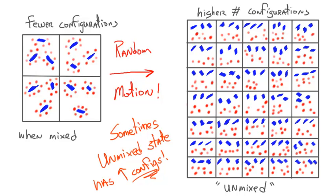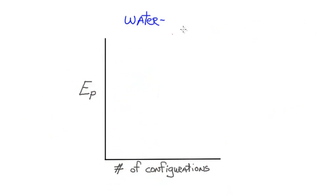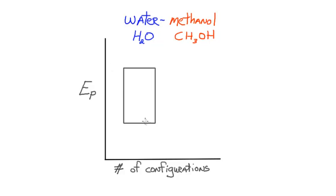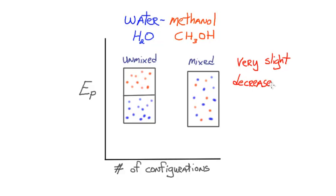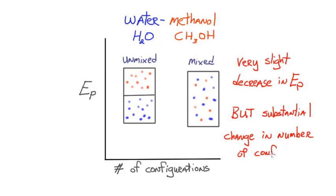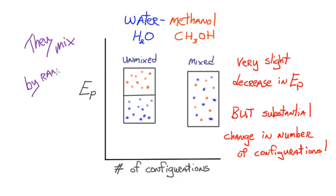Now let's take a look at some examples. Starting with water and methanol — we know that water and methanol mix very well, so let's use the Peck diagram to understand why. If we plot water and methanol unmixed on the Peck diagram, we can see that in general it's slightly higher potential energy unmixed compared to mixed. In addition, there is a higher number of configurations when water and methanol mix versus unmixed. So both factors — the energetic factor and the configurational factor — favor water and methanol mixing, and they dissolve in each other very well. The configurational change is the dominant effect here, though the potential energy also contributes.